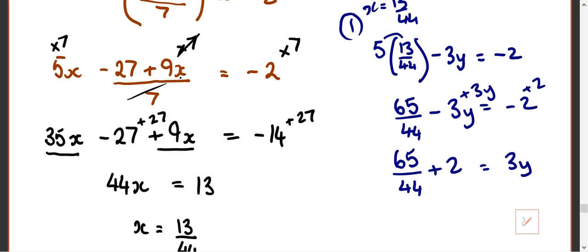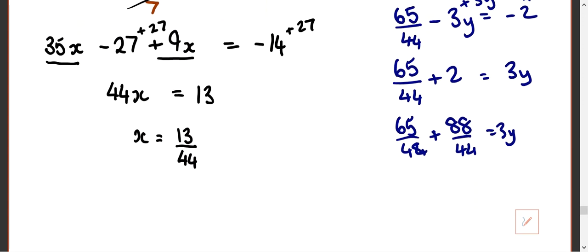So just add 88 to the fraction. So 2, 65 over 44, 2 is actually 88 over 44. Are we all happy with that? 88 divided by 44 is 2. And then you can add them together.